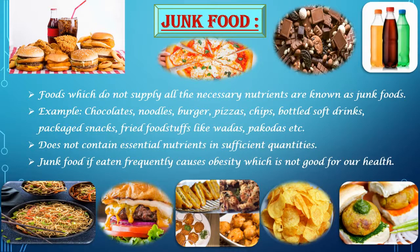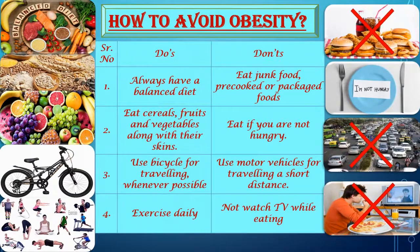Obesity is not good for our health. Now how to avoid obesity? There are some dos and don'ts to avoid obesity. The dos are: you should always have a balanced diet, eat cereals, fruits and vegetables along with their skins, use a bicycle for traveling whenever possible, and exercise daily. The don'ts are: do not eat junk foods or pre-cooked or packaged foods, do not eat if you are not hungry, and do not use motor vehicles for traveling a short distance.